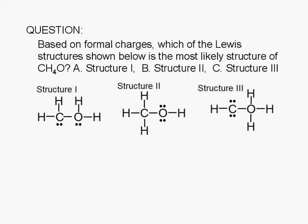All of these structures follow the octet or duet rule. All of the hydrogen atoms have only one single bond. This carbon atom has an octet, so does this oxygen atom, and this carbon atom, and this oxygen atom, and this carbon atom, and this oxygen atom. So how do we determine which structure best resembles reality?